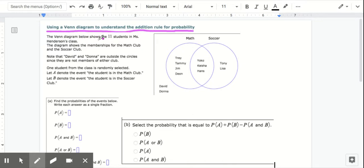Alright, so this Venn diagram shows the 11 students in Miss Henderson's class. So here you see 1, 2, 3, 4, 5, 6, 7, 8, 9, 10, 11. The diagram shows the memberships for the math club and the soccer club.